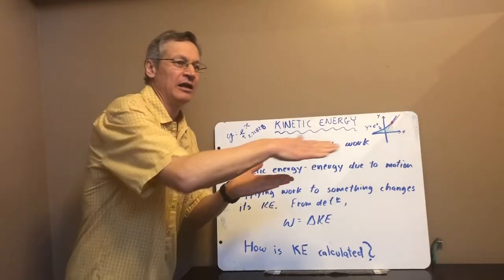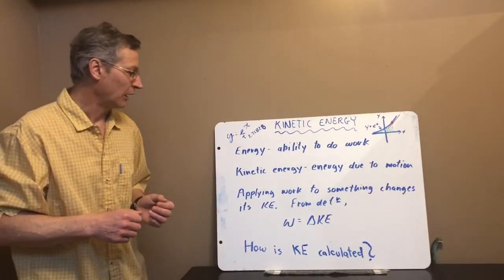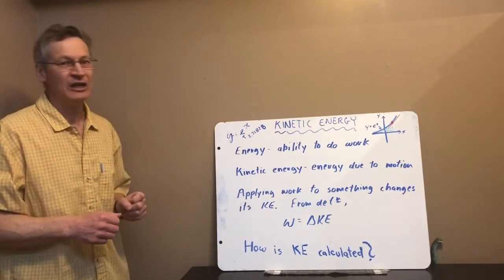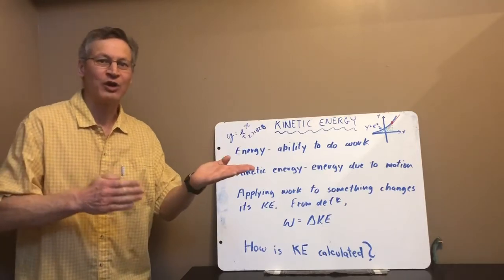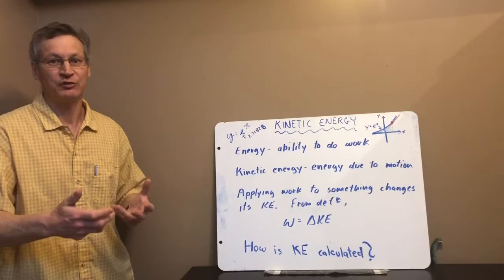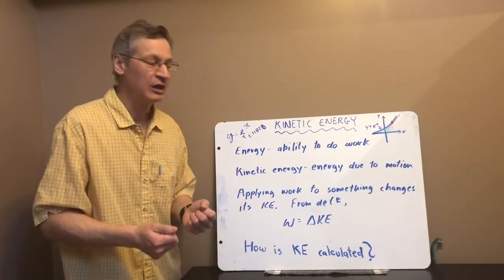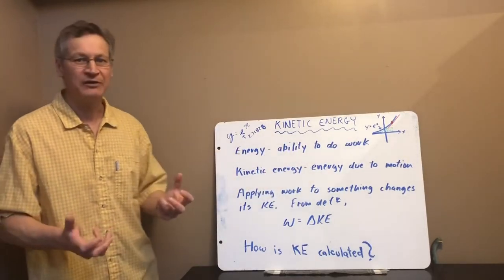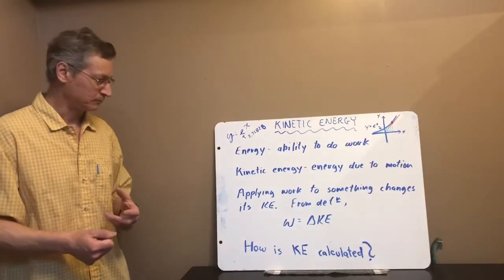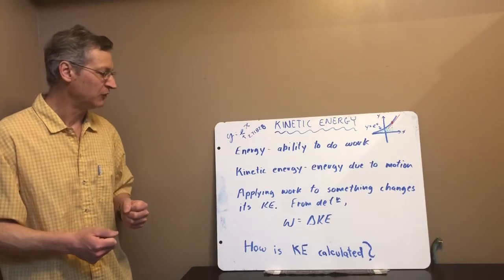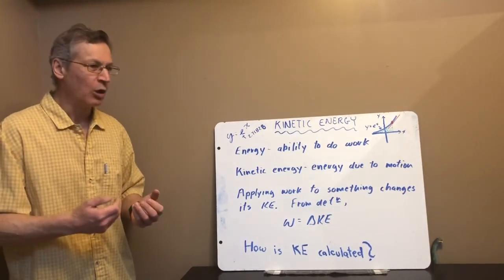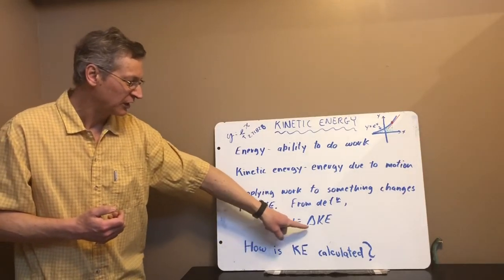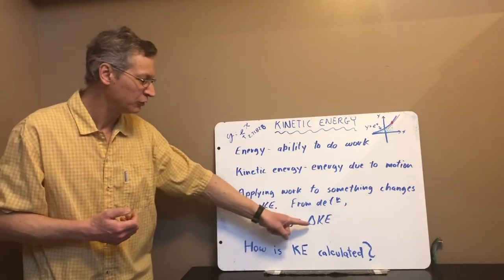Kinetic energy is energy due to motion. Anything that is moving can do some work — it can supply a force over a distance. Now here's where it gets mathematical: if you apply work to something, its kinetic energy is going to change. If you apply a force over a distance to something, you're going to change its velocity. The definition is basically saying that energy and work are equivalent. However much work you do on something, you're going to change its kinetic energy the same amount — in other words, work is equal to change in kinetic energy.